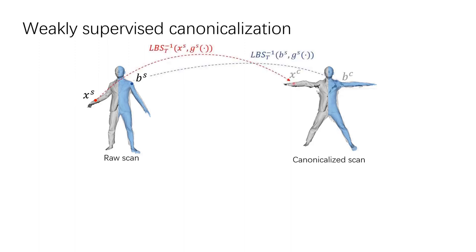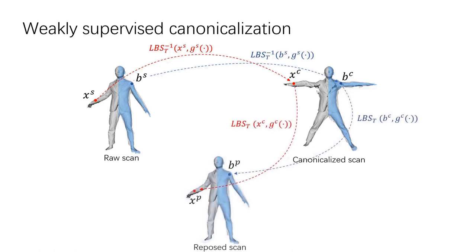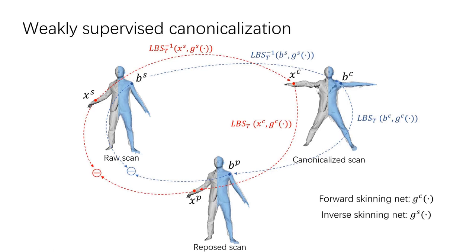The canonicalized scans can be posed back, and they should match the original scans. Based on these observations, we learn two neural networks called forward and inverse skinning networks that transform vertices in each direction. We train these networks primarily with the supervision of ground truth skinning weights for the body surface and the geometric cycle consistency.